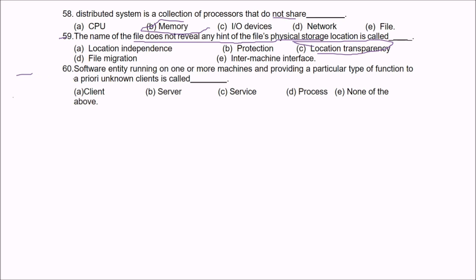Question 60: A software entity running on one or more machines and providing a particular type of function to a priori unknown clients is called a service.